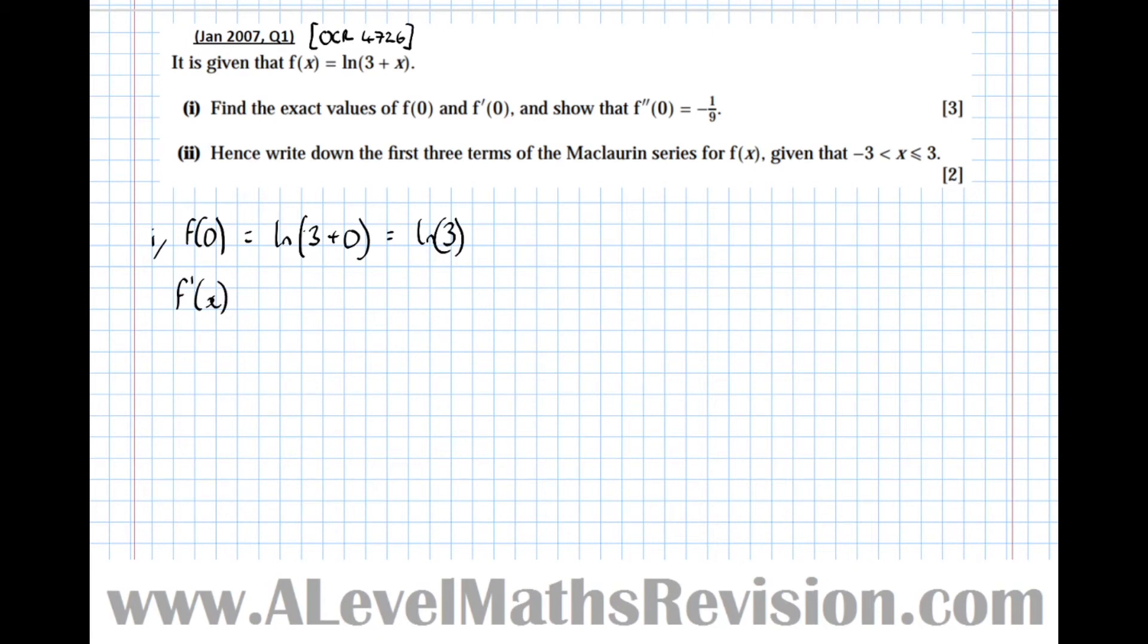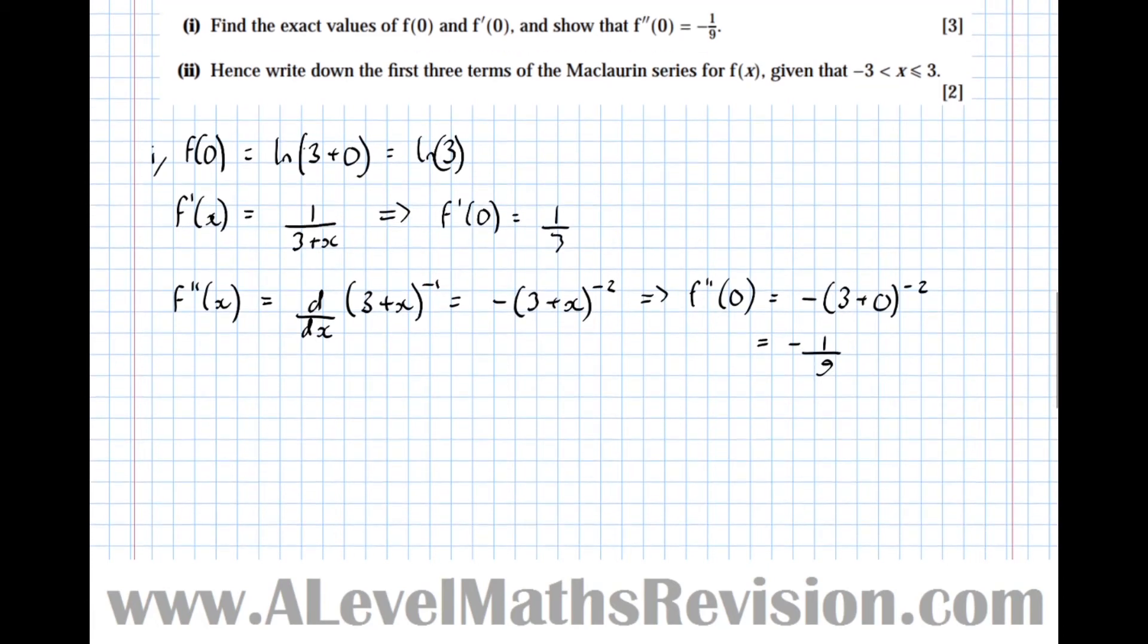So f of 0 equals log of 3 plus 0 equals log 3. Then to find f dash 0, we'll first differentiate equals 1 over 3 plus x times the differential of x, which is just 1. Therefore, f dash 0 equals a third. Now we'll differentiate again. We've got f double dash x equals the differential of 3 plus x to the power of minus 1 equals minus 3 plus x to the minus 2. Which means that f double dash of 0 equals minus 3 plus 0 to the minus 2 equals minus a 9th. So there we've done it. We've done part 1. We've shown exactly what I wanted us to show.